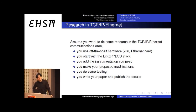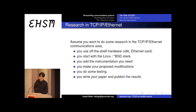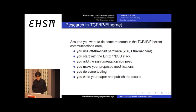To illustrate the research situation, consider how academic and independent research works in the TCP/IP Ethernet world. If you have a bright idea about TCP congestion control, all you need is off-the-shelf hardware — an x86 system with an Ethernet card. You start with open source implementations like Linux or BSD, add instrumentation, make modifications, do performance testing, write a paper, and publish. Everything needed for applied practical research is already there.